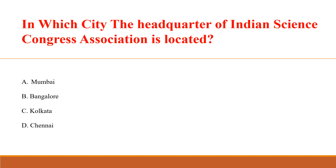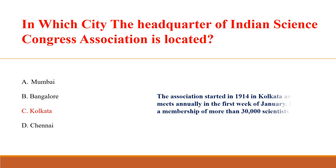In which city is the headquarter of the Indian Science Congress Association located? Answer C: Kolkata. The association started in 1914 in Kolkata. It meets annually in the first week of January and has a membership of more than 30,000 scientists.